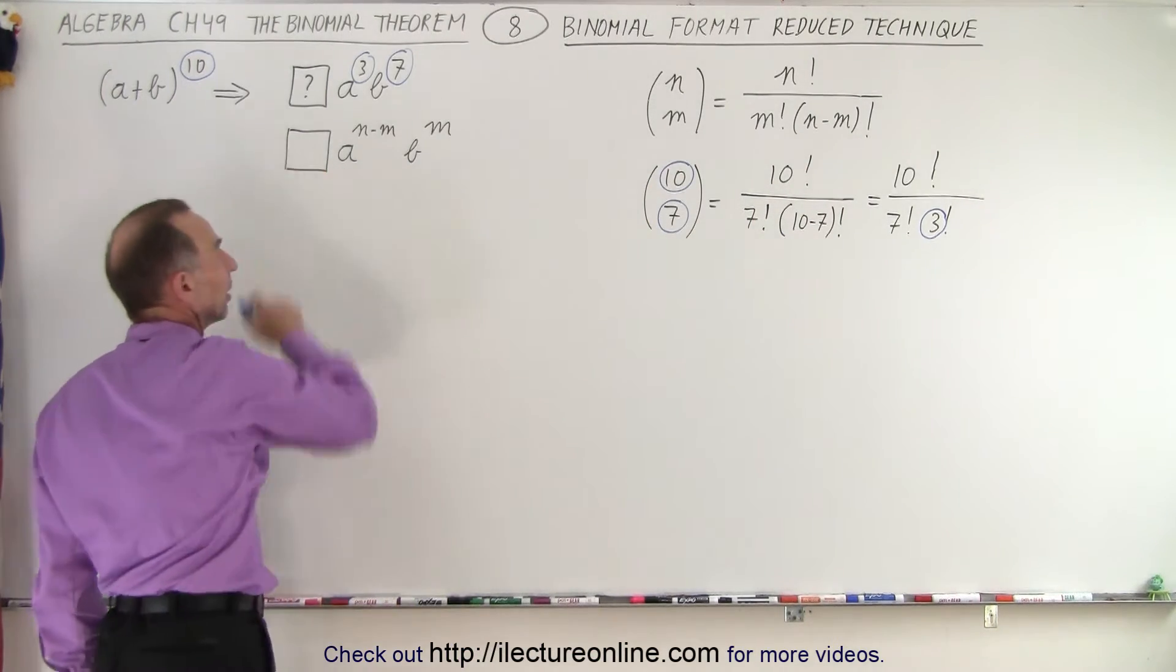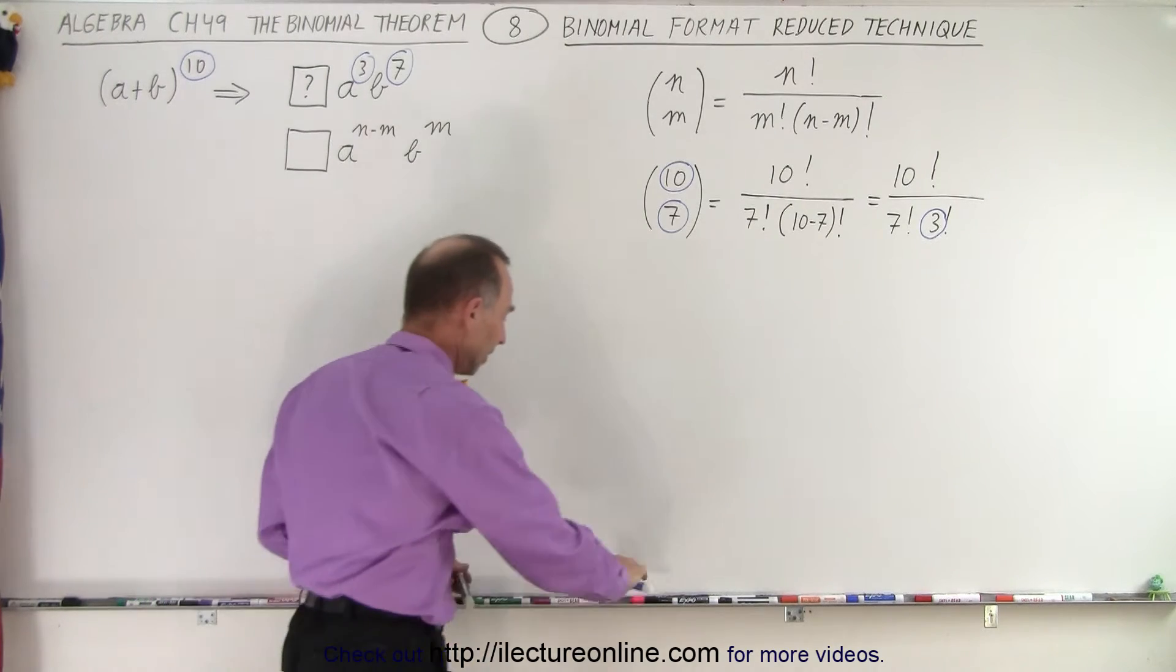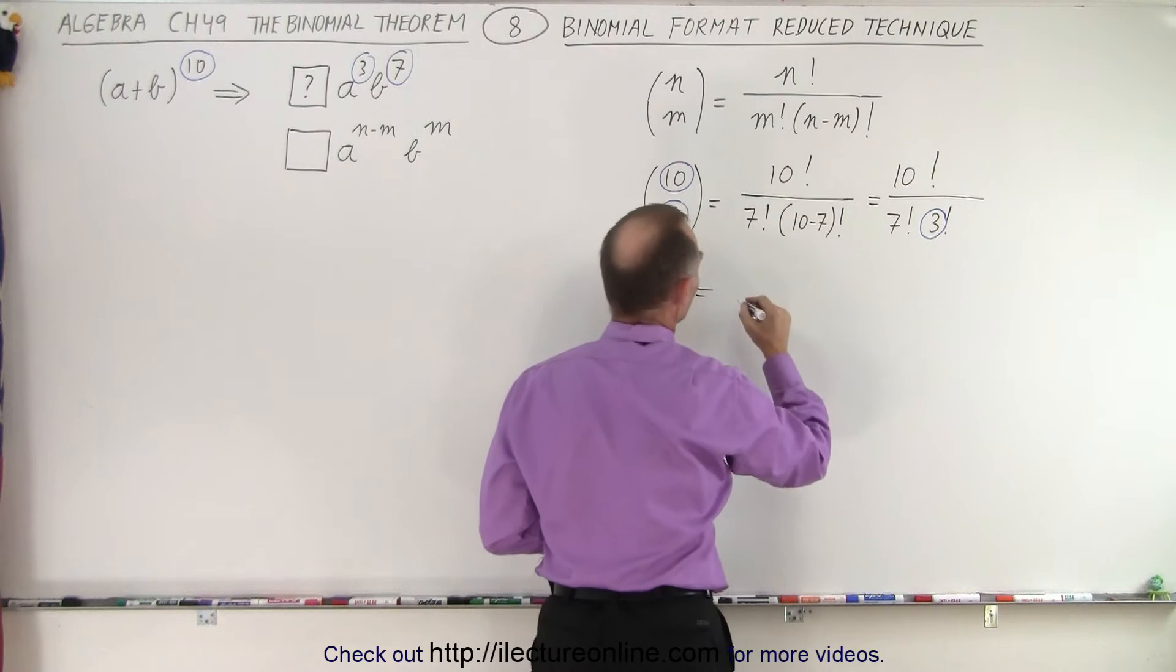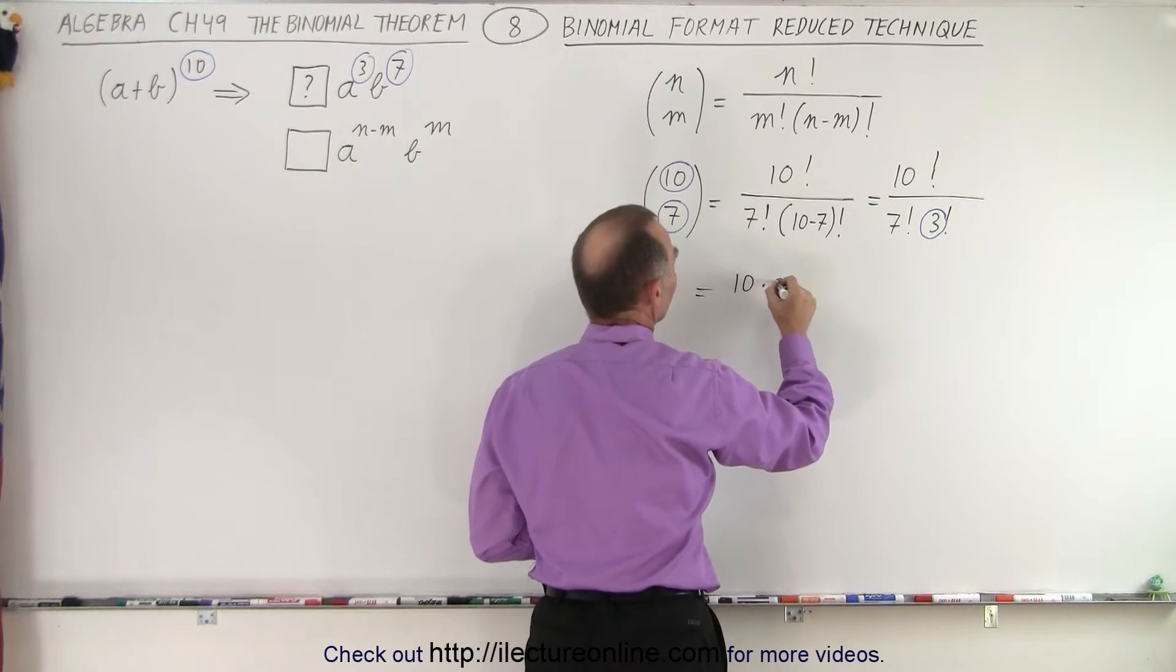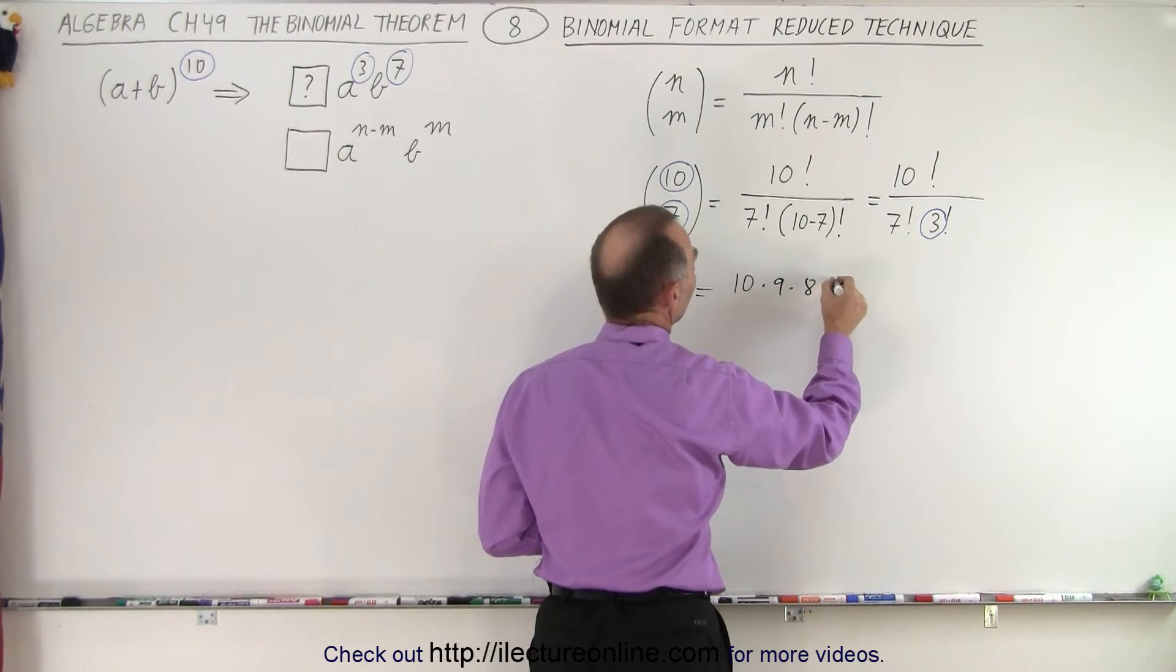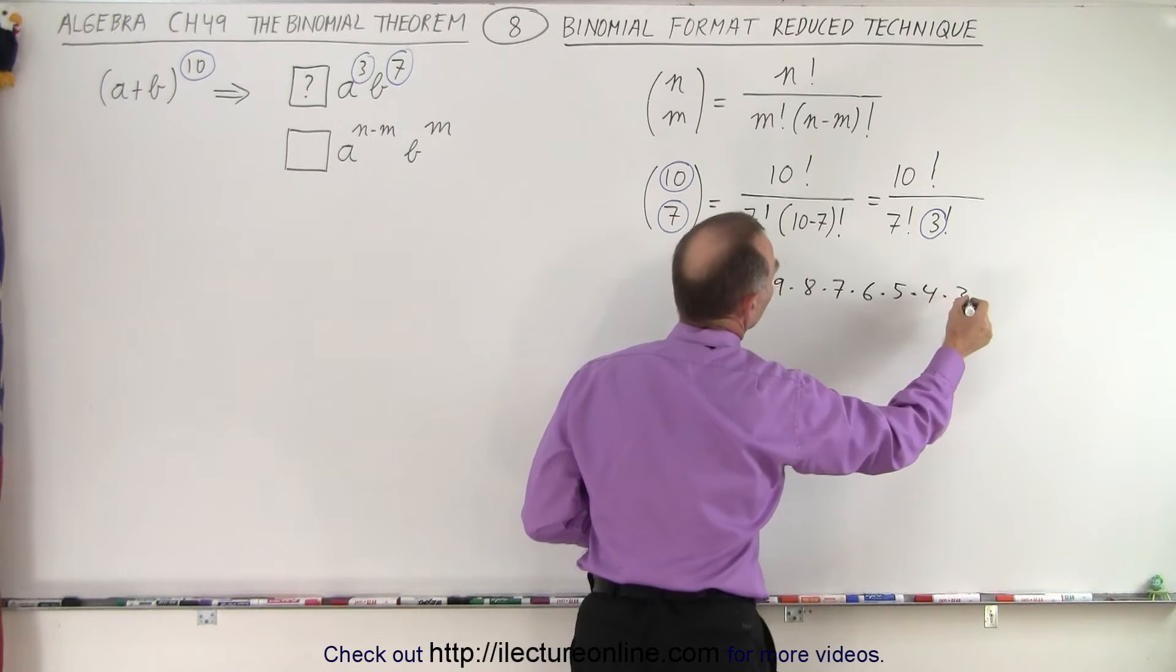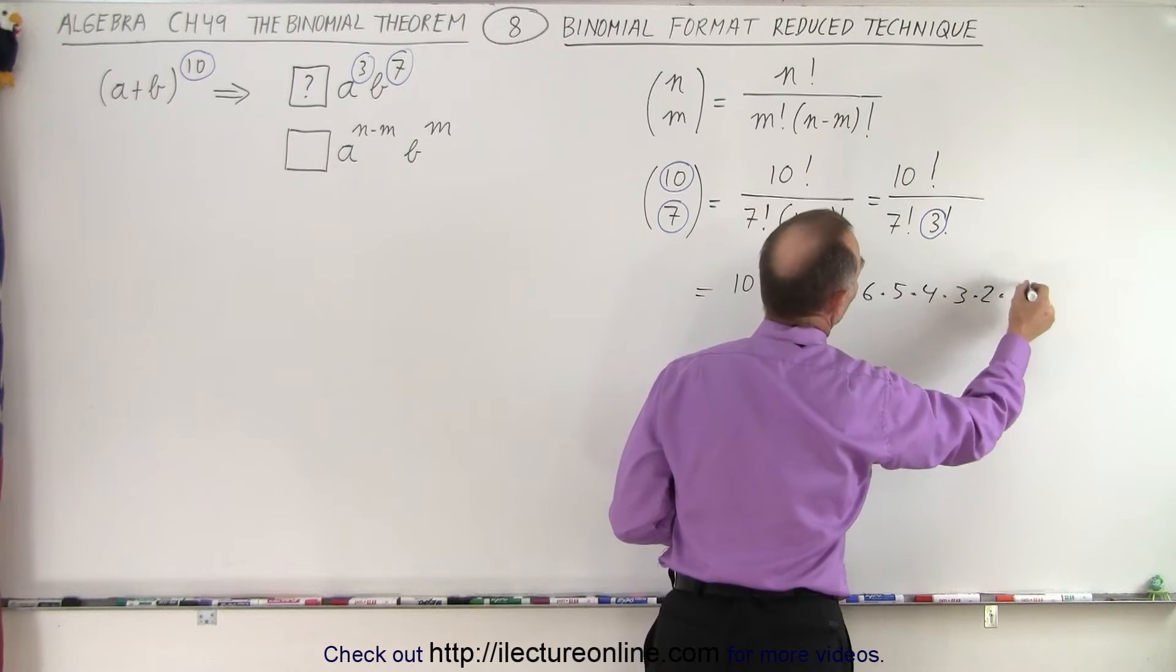All right, let's see what number that is based upon what we have there. So we're going to write this out. So this is equal to 10 factorial. That's 10 times 9 times 8 times 7 times 6 times 5 times 4 times 3 times 2 and times 1.